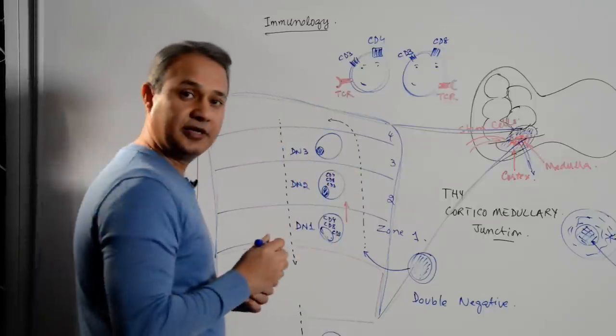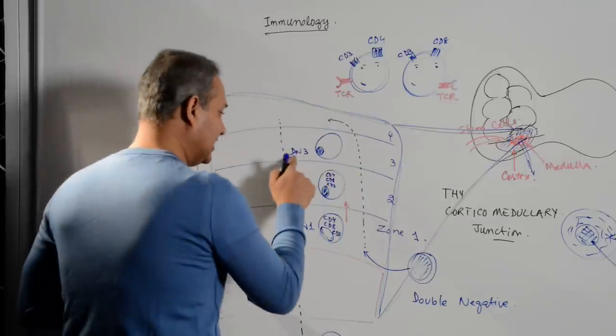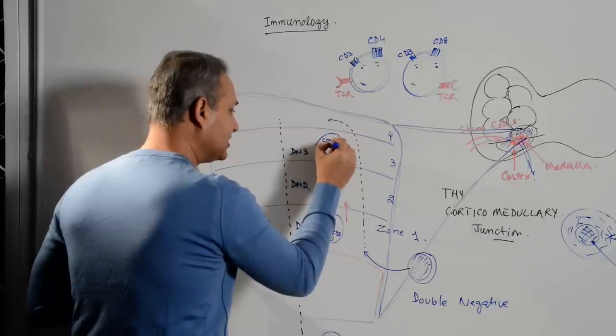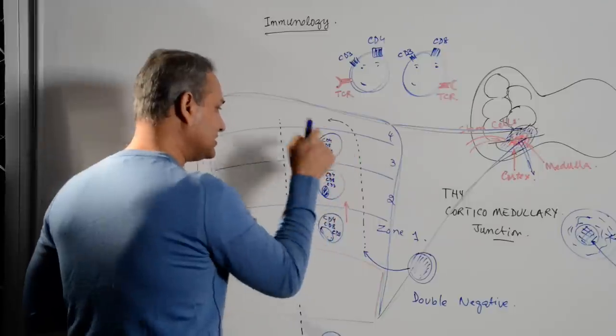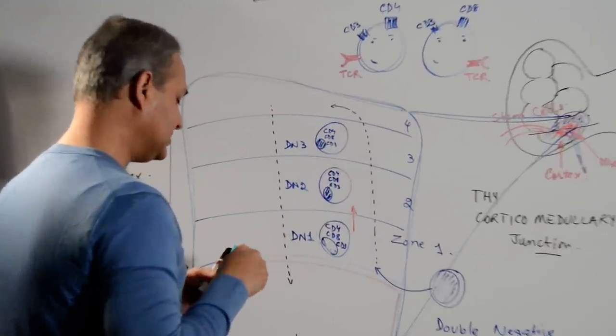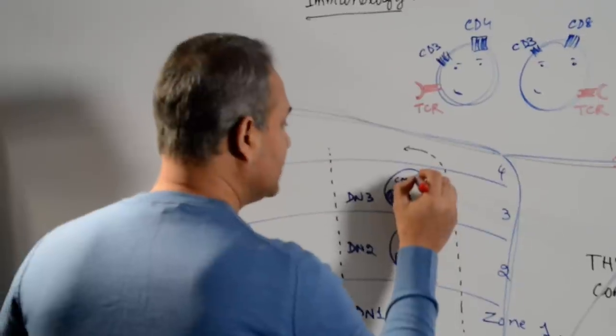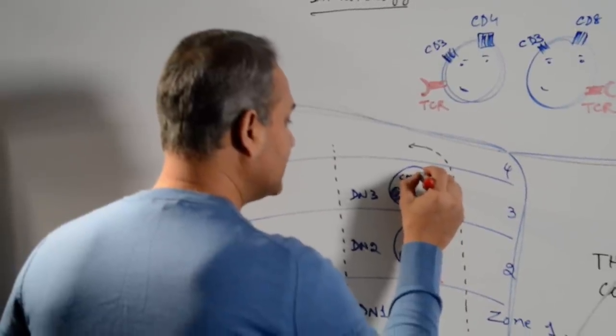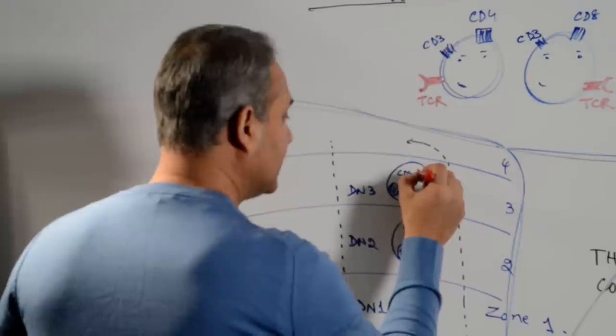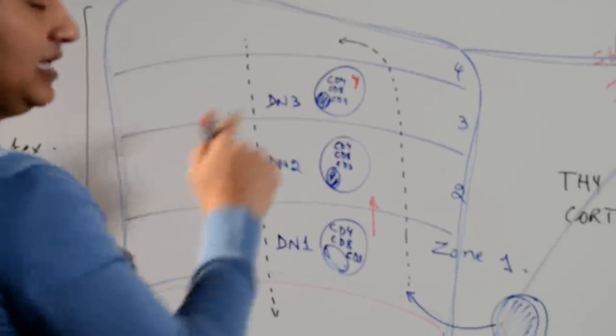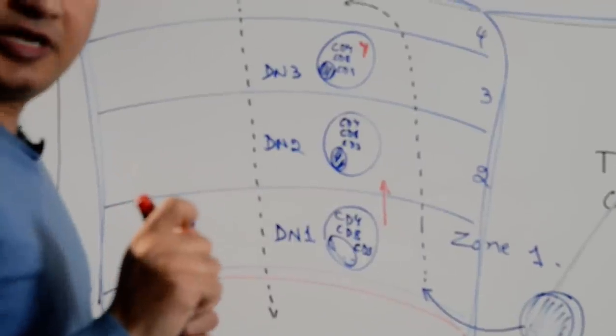Now we come to the zone three. Zone three, again, double negative. So that means CD4, CD8, CD3 are still inside. But this cell has started making the beta chains for its T cell receptor. So T cell receptor has started becoming formed. The T cell receptor is being manufactured now.